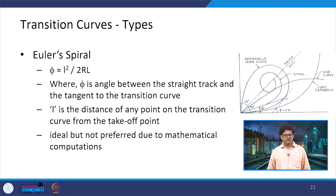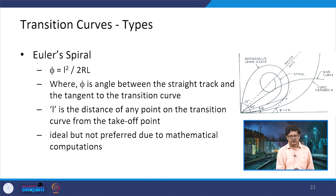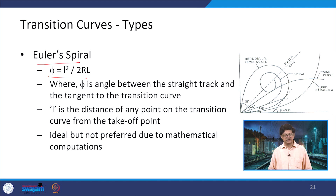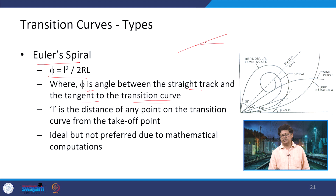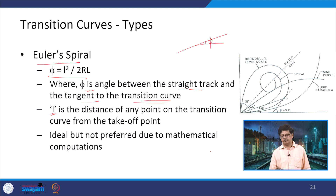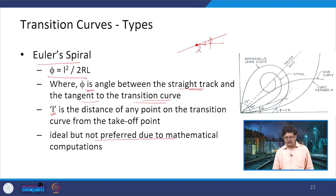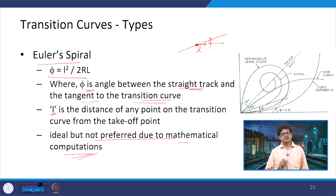Various types of transition curves: the Euler spiral (Clothoid) has the equation φ = L²/(2RL), where φ is the angle between the straight track and the tangent to the transition curve at distance L from the takeoff point. This is ideal but not preferred due to mathematical computation difficulties in field setting.